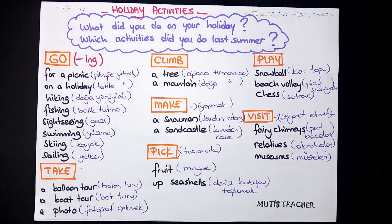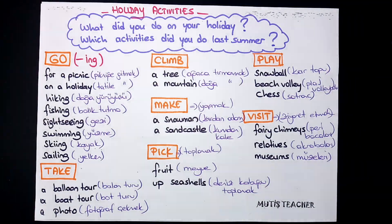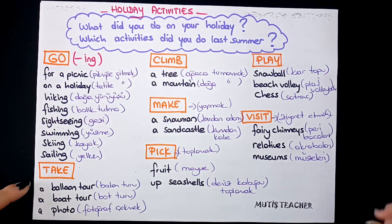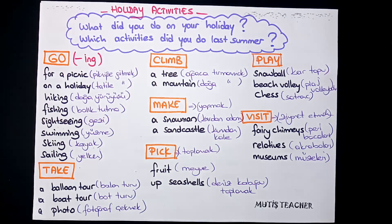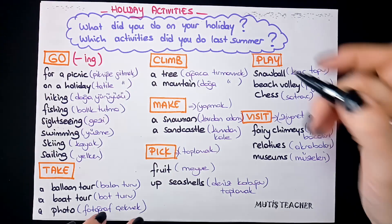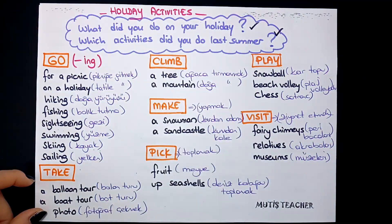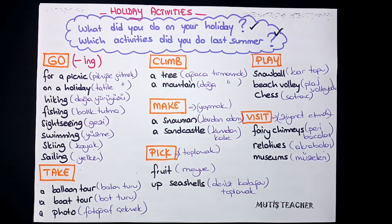Bu ünitedeki önemli kısımları size gruplandırdım. İlk olarak Holiday Activities — tatilde yaptığımız etkinliklerden bahsetmemiz lazım. Tatillerde neler yaparız, nerelere gideriz? Bu ünitede en önemli soru kalıpları: 'What did you do on your holiday?' (Tatilde ne yaptın?) ve 'Which activities did you do last summer?' (Geçen yaz hangi aktiviteleri yaptın?) Bu iki soru genelde denemelerde karşınıza çıkar.